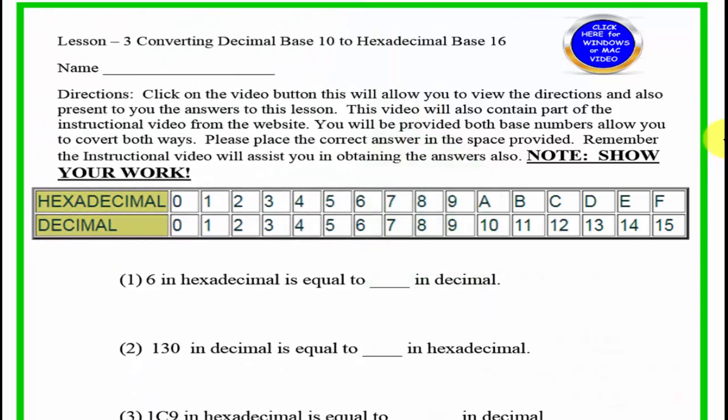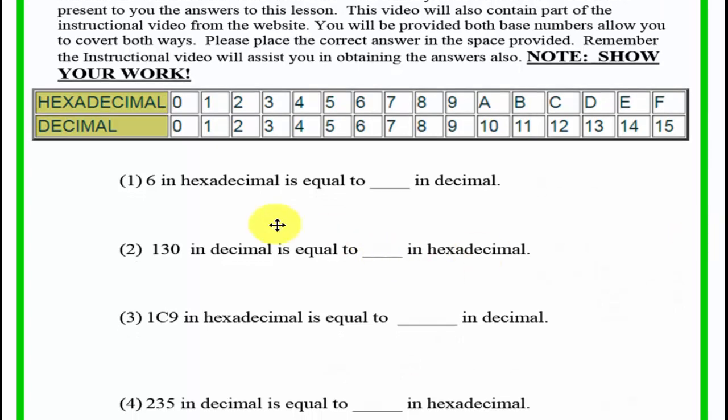Welcome back. Let's see how well you did. Let's look at the first one. Well, the first one, 6 in hexadecimal is equal to, this is an easy one, here's hexadecimal, here's decimal, so it must be equal to 6, or 6 times 1.